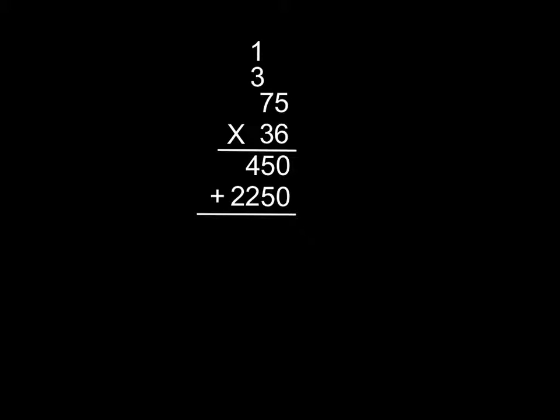Now we have two partial products. We have seventy-five times six, and we have seventy-five times thirty. Those two partial products we're going to add together for our final answer to get the final product for seventy-five times thirty-six.